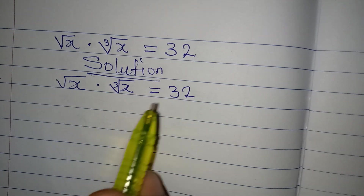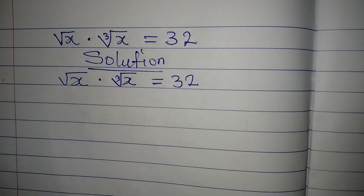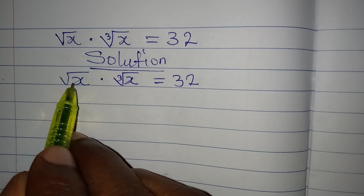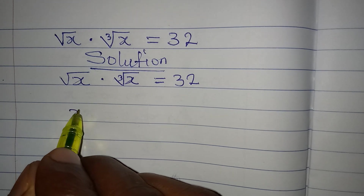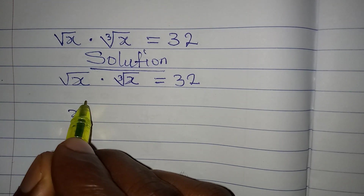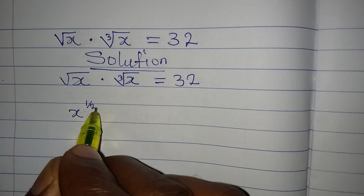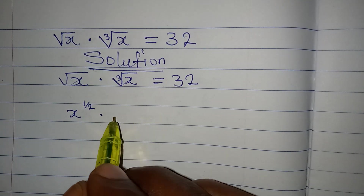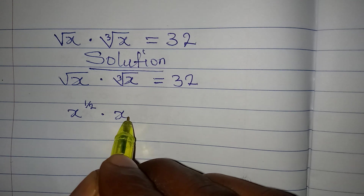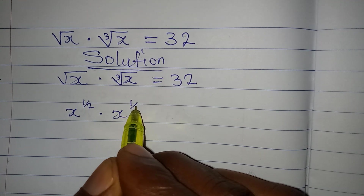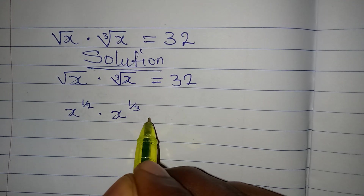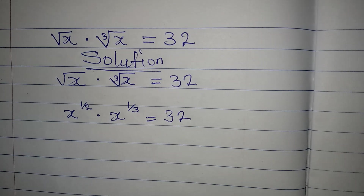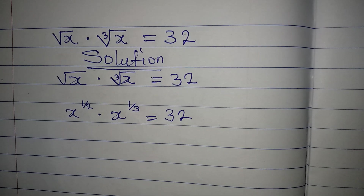The square root of x is the same thing as x to the power of 1 over 2, then multiplied by the cube root of x, which is the same thing as x to the power of 1 over 3, and the whole of this is equal to 32.